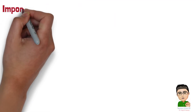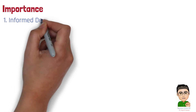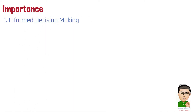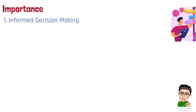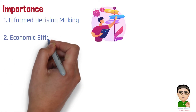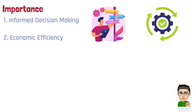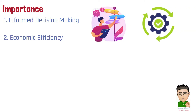Learning about opportunity costs is important for the following reasons. Number 1: Informed decision making. Opportunity costs help individuals and businesses make informed decisions by considering the value of the next best alternative that is foregone, leading to more efficient allocation of resources. Number 2: Economic efficiency. By understanding opportunity costs, businesses can strive for economic efficiency — avoiding wasting resources on less productive uses and instead focusing on the most beneficial activities.